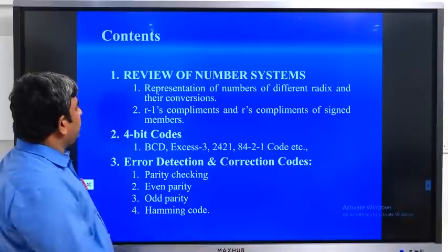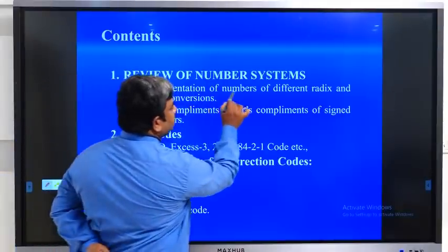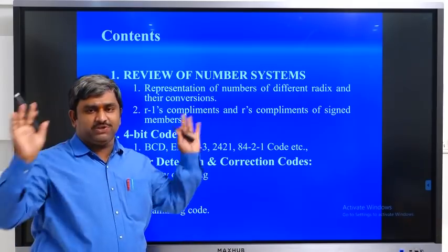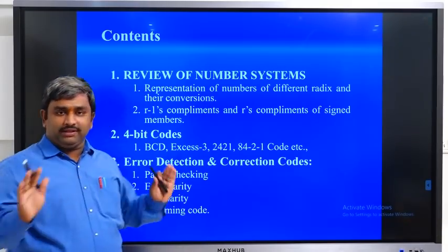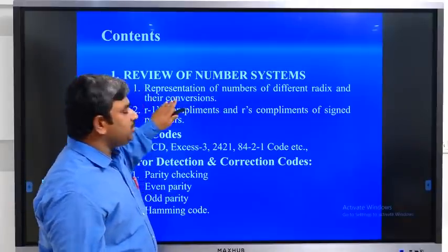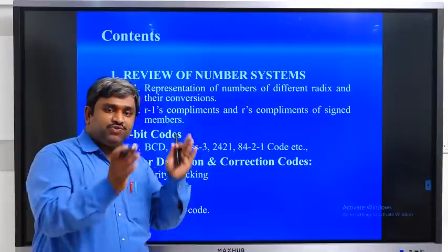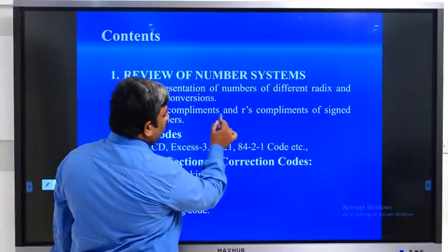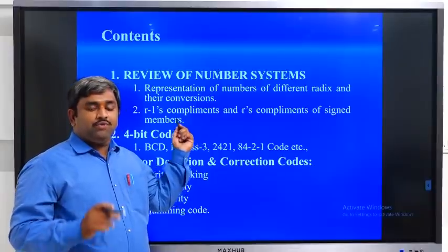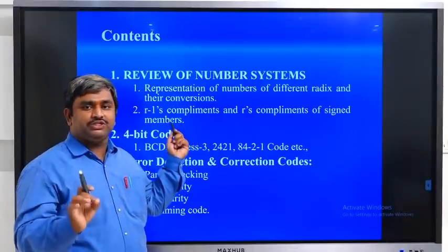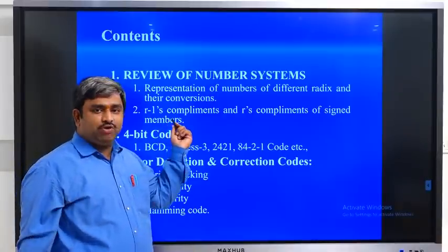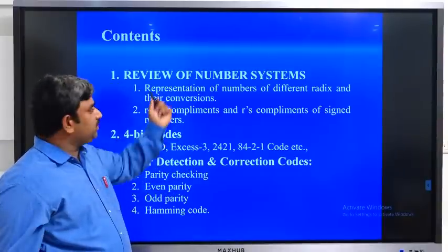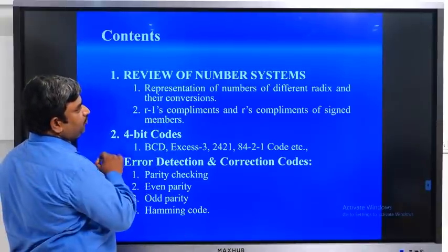In the first part — Review of Number Systems — we will see the representation of numbers of different radix and their conversion. We will see different types of number systems available for operating machines and the conversion from one system to another. We will also cover R-minus-1's complement and R's complement of signed numbers, which is a special and very attractive operation used for performing different types of logical operations.